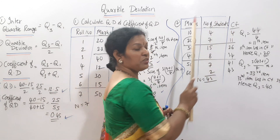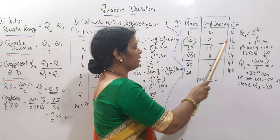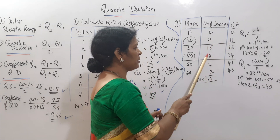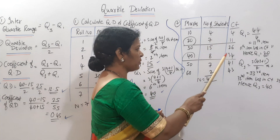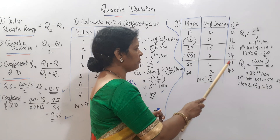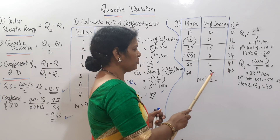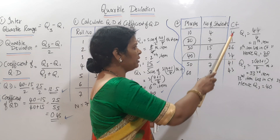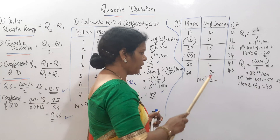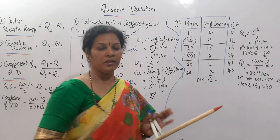We calculate the cumulative frequency: 4, then 4+7=11, then 11+15=26, then 26+8=34, then 34+7=41, then 41+2=43. So N is equal to 43.